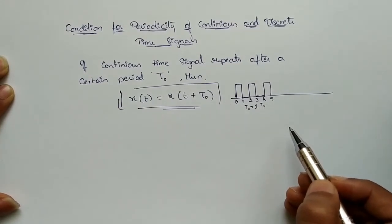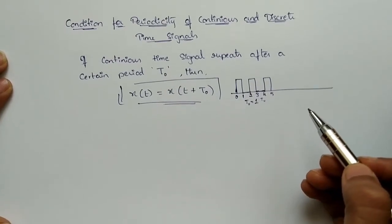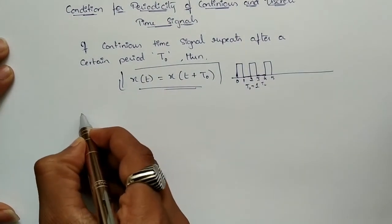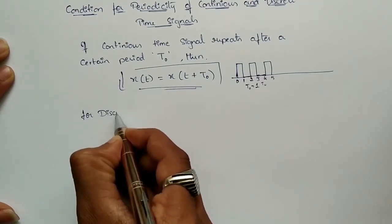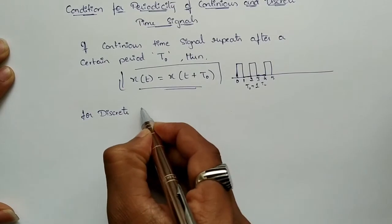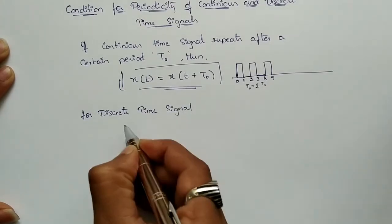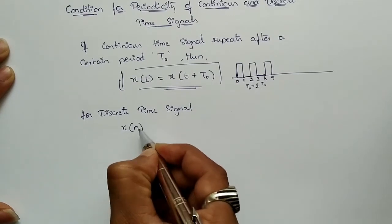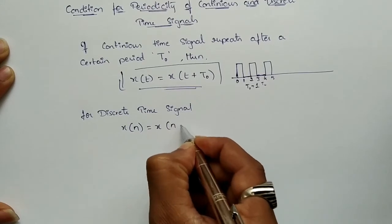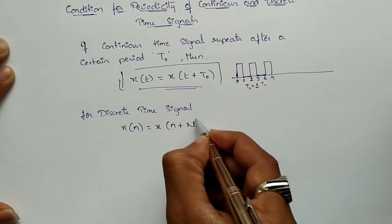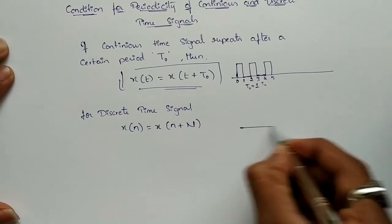Similarly, for a discrete time signal, x[n] = x[n + N], which means the discrete time signal repeats after a period of N samples.